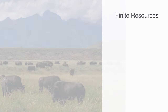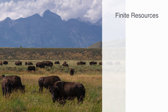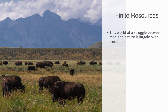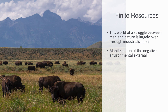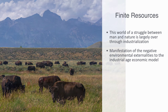The industrial model of the economy was built in a world of what appeared to be almost infinite resources — a world where millions of buffalo roamed across the prairies of North America and all you had to do was tame nature and the bounties were endless. This world of struggle between man and nature is largely over — through industrialization we can declare victory. But this has come at a high price, with a growing manifestation of the negative environmental externalities of the industrial age economic model, coupled with a growing recognition of the finite supply of natural resources.